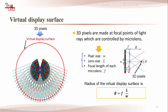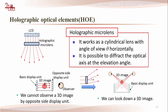Let W be the pixel size of the LCD, L be the size of each micro-lens, and F be the focal length of each micro-lens. The radius of the virtual display surface is given by this equation. In this study, we use a holographic micro-lens. Each holographic micro-lens works as a cylindrical lens with angle of view θ horizontally, so the observed 3D image has parallax only in the horizontal direction.